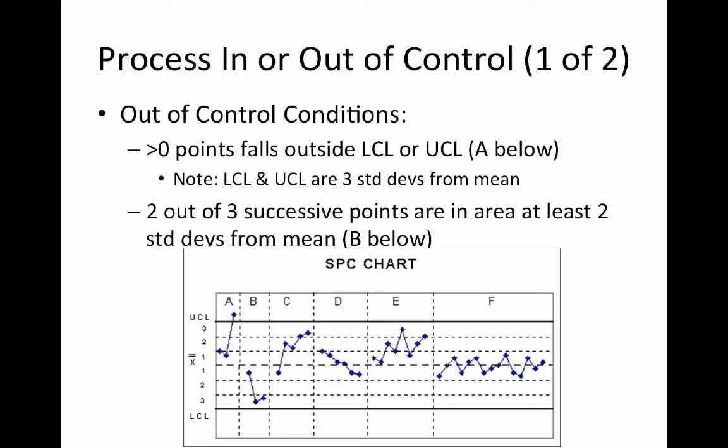So now looking specifically at the control chart and what would cause it to be out of control. So here, let's take this process. We have the mean, which is this X bar, and it's this dotted line going across. And then we have the upper control limit, which is three standard deviations from the mean, and it's this solid bar.